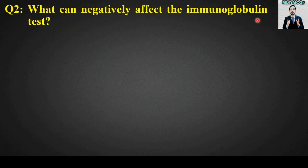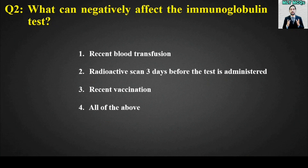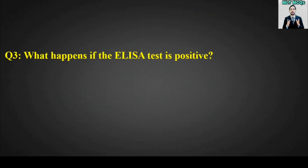MCQ number 2: What can negatively affect the immunoglobulin test? Options are: recent blood transfusion, radioactive scan 3 days before the test is administered, recent vaccination, or all of the above. The right answer is option number 4 — all of the above.